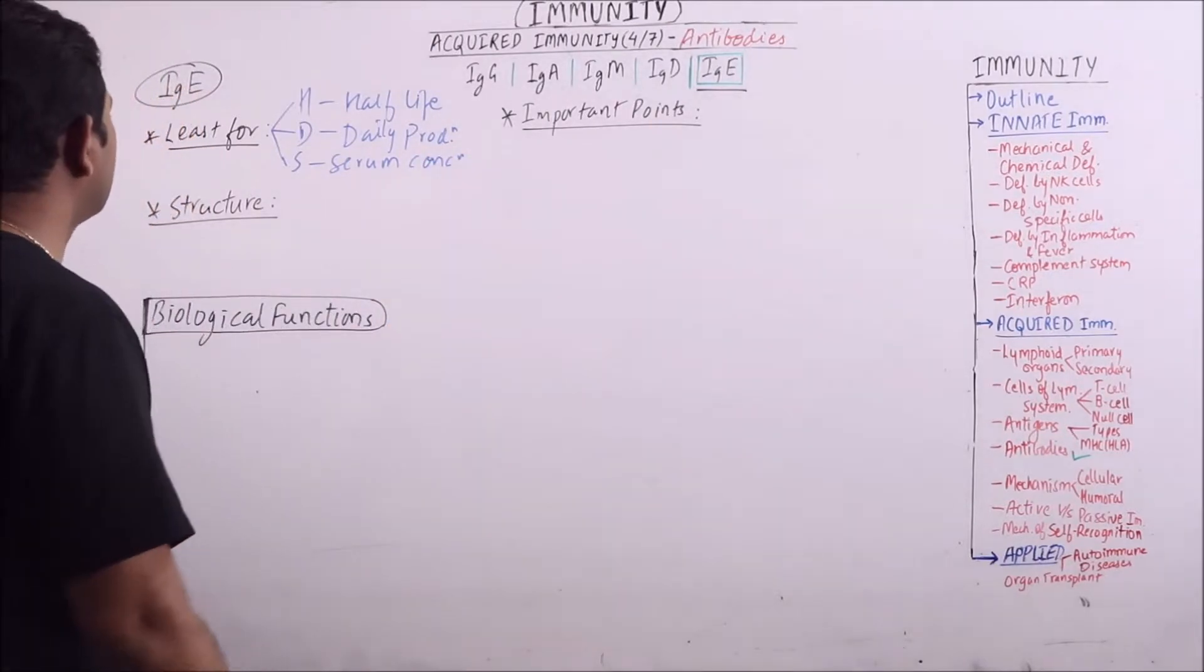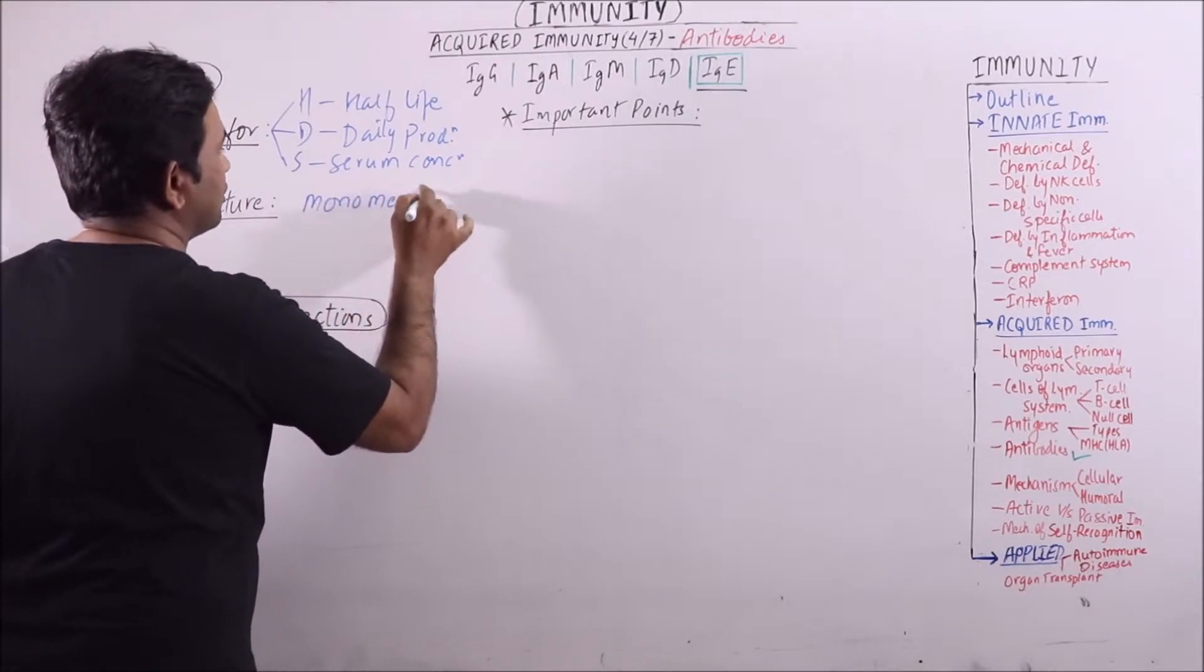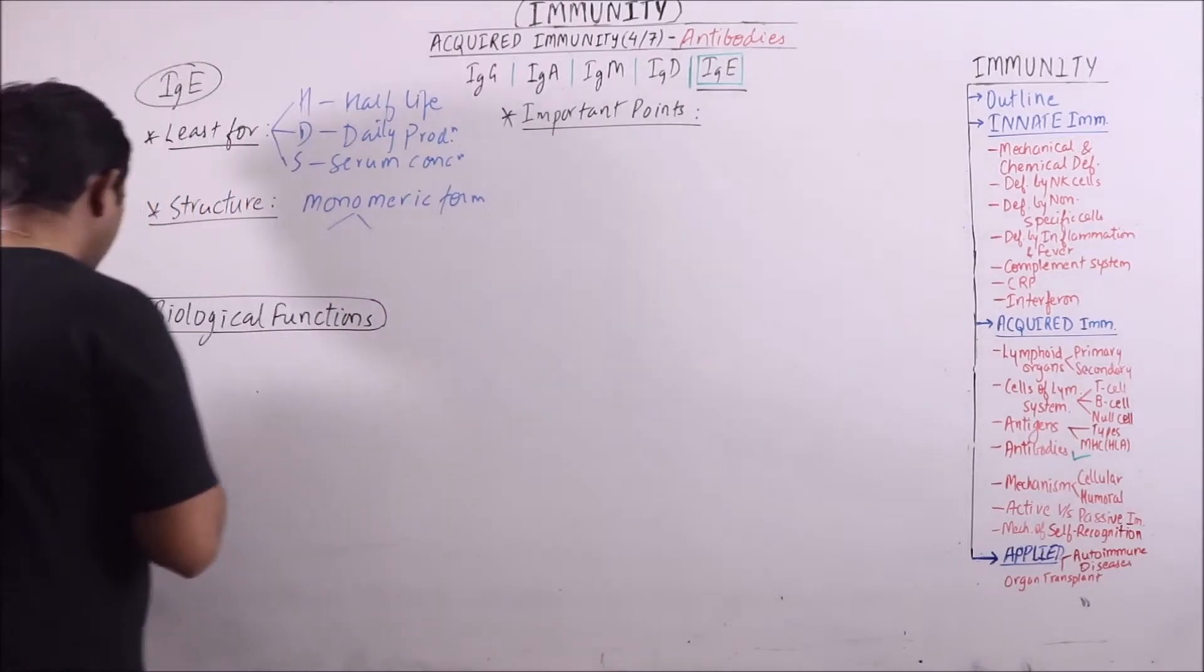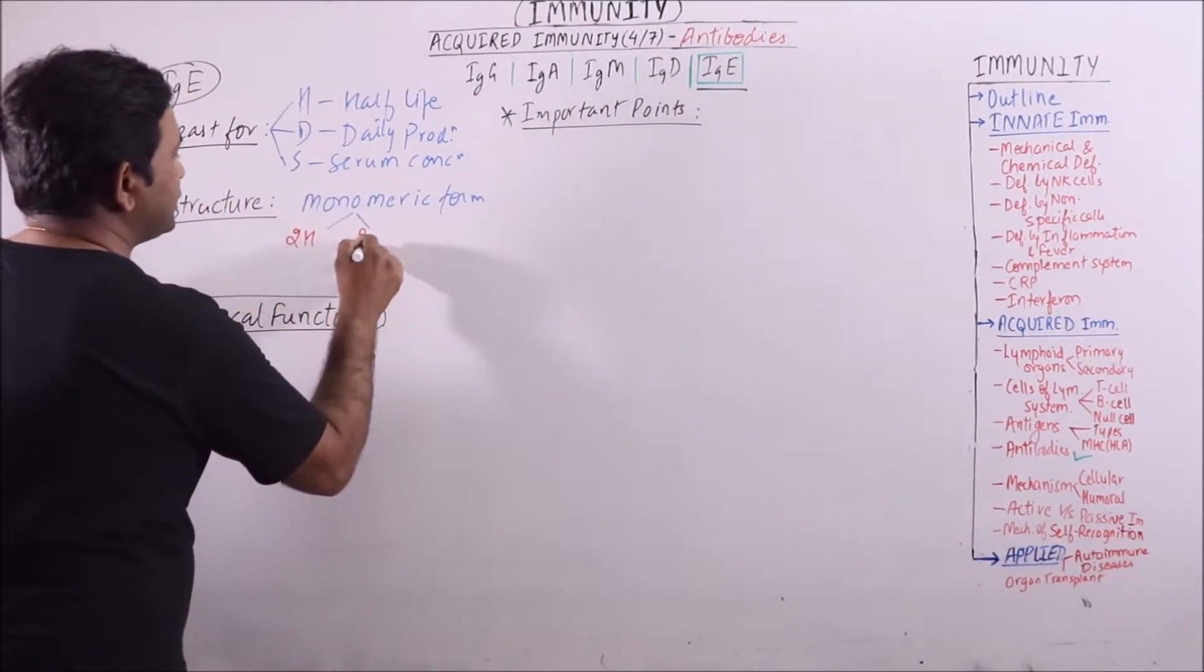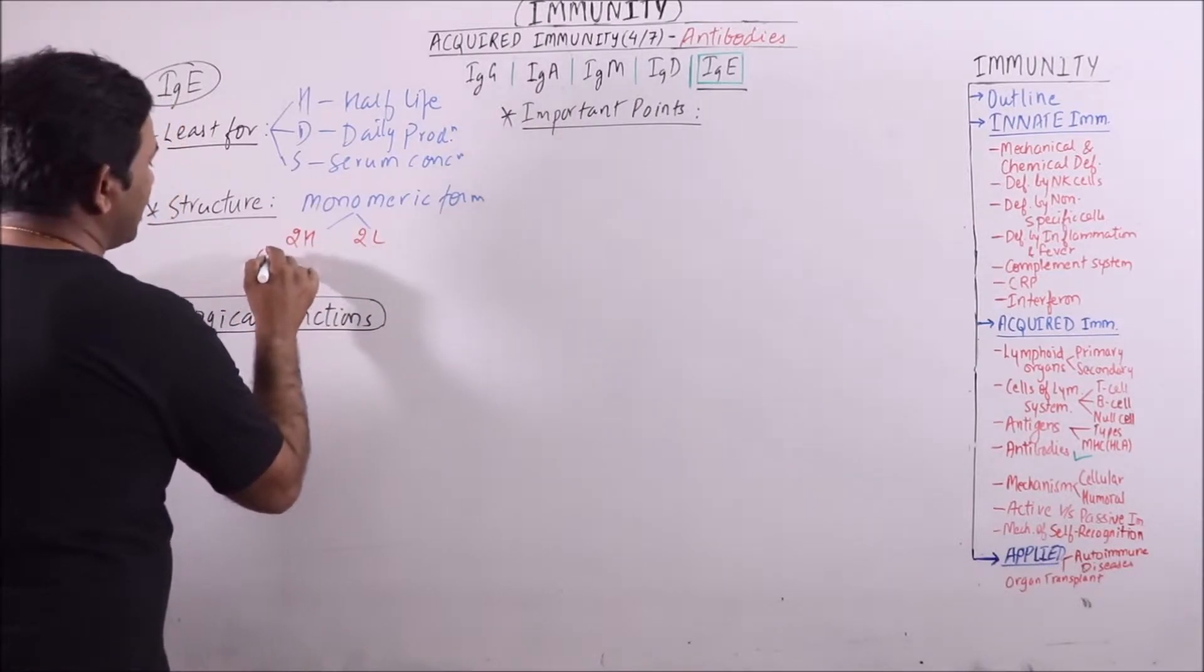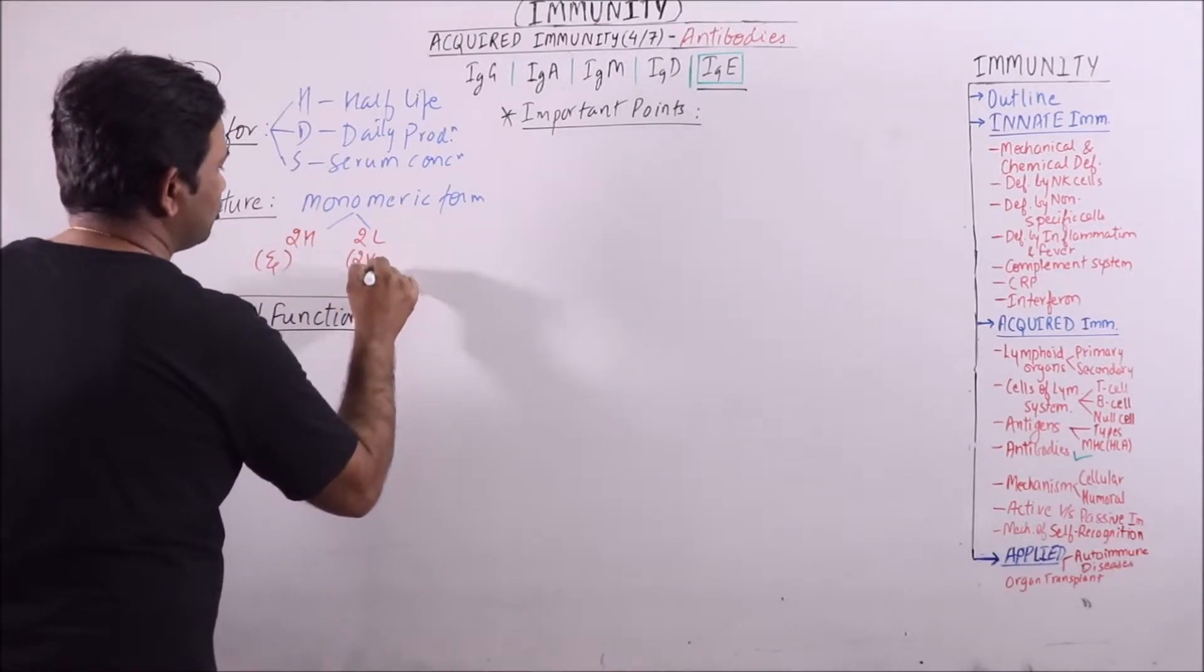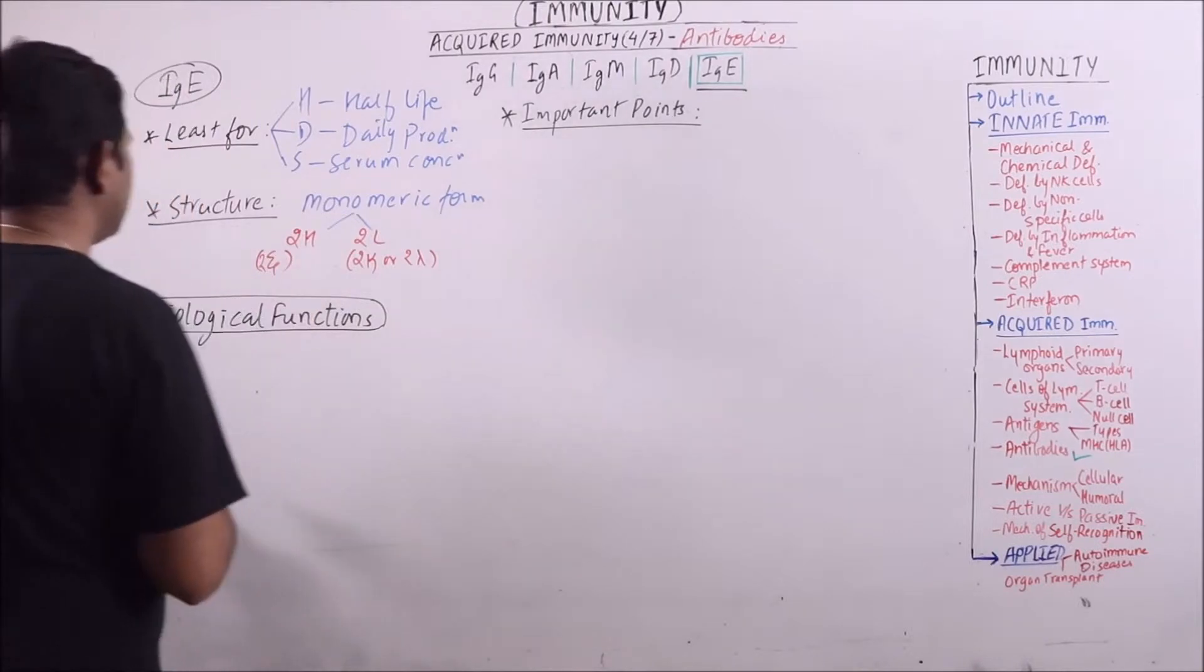This structure exists as monomeric form. Monomeric form is having two heavy chains and two light chains. These two heavy chains are epsilon type and the light chains are either two kappa or two lambda. Here two epsilon chains.